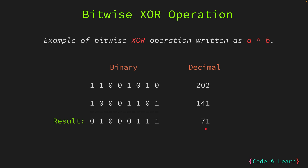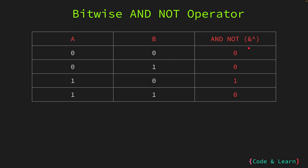Next we have the AND-NOT operator, represented by an ampersand sign and a caret sign. The AND-NOT operator sets the resultant bit if the corresponding bit is set in the first number but not in the second number — so it is important to note that the order of operation is significant here. Referring to the table, the first number is A while the second is B. For the case of 0 and 0, since we don't have the bit set in A, the result will be 0. For 0 and 1, the bit is not set in the first number, so the result is also 0.